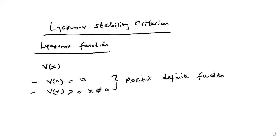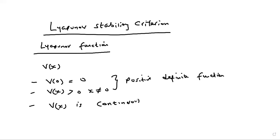That means a Lyapunov function must first be positive definite. Property three is that V(x) is continuous and has continuous derivatives with respect to all components of x — that means V(x) is continuous and also has continuous derivatives.